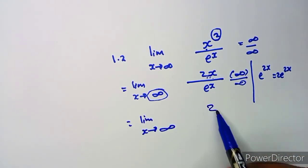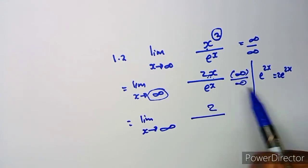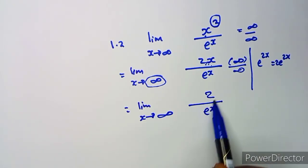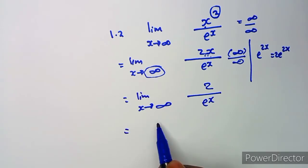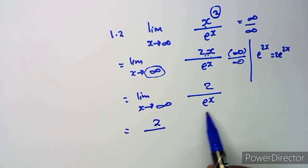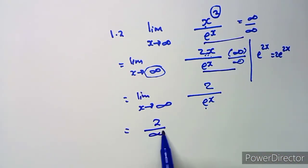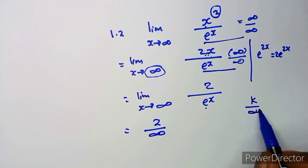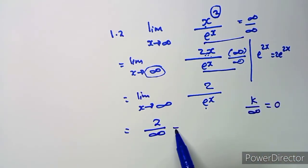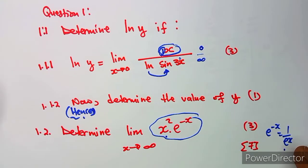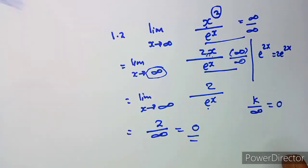Applying L'Hôpital's rule again: the derivative of 2x is 2, and e^x remains e^x. Now we have 2 over e^x as x approaches infinity. Since e^x approaches infinity, we have 2 over infinity, and a constant over infinity equals zero. So the limit is zero. These questions were worth seven marks in total.